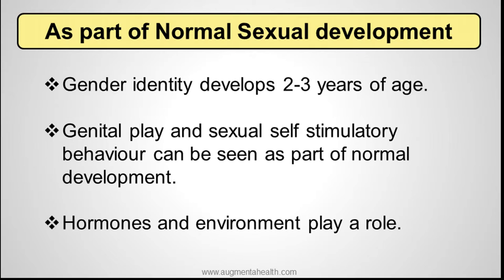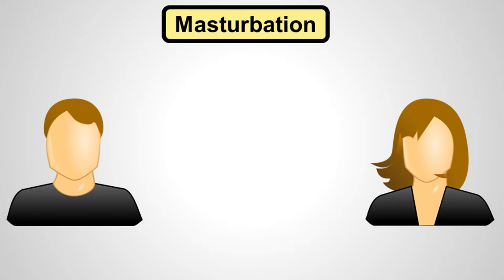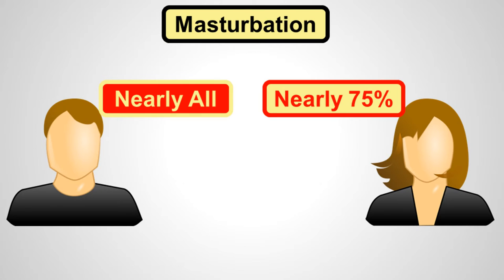A child at about age 2 to 3 years develops the concept of gender identity. Genital play or self-stimulating behavior can be seen as a part of normal development. Hormones and environment have their own role to play in sexual development. Masturbation is considered a normal part of sexual development. About almost all men would have been involved in masturbation, whereas about 75% of women might have engaged in masturbation activity.